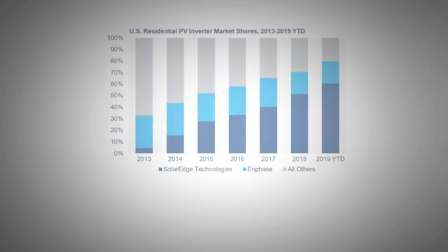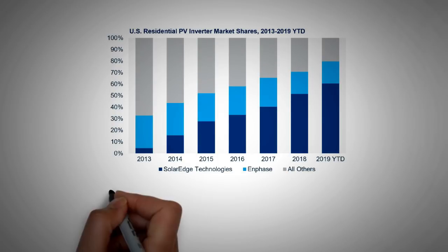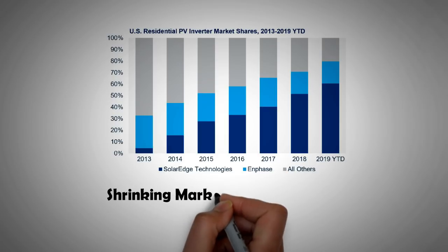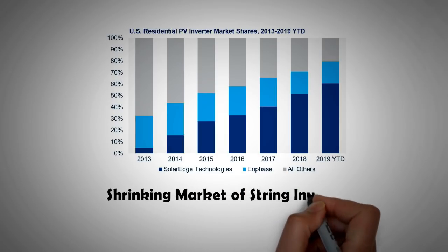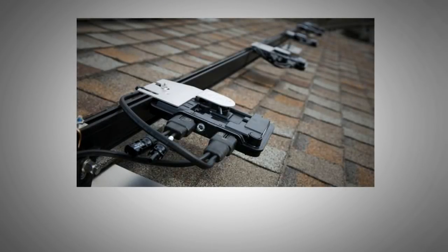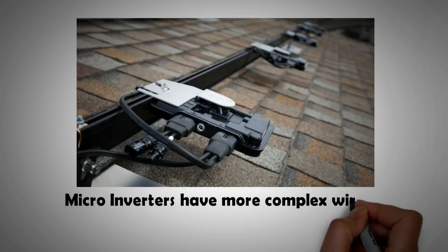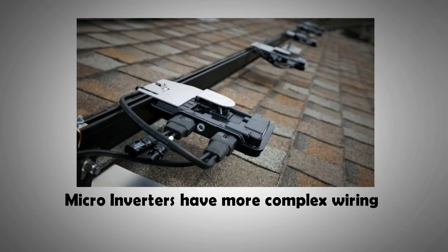However, micro-inverters haven't been able to completely dislodge string inverters from their perch, mainly because of their higher upfront system cost. The other problem they posed was the complex wiring, where instead of a single AC circuit leading to the grid, there had to be several AC circuits leading up to the roof and connecting to the grid. Having said that, they lowered the voltage the wires were carrying, which can be very advantageous for safe operation in several scenarios.